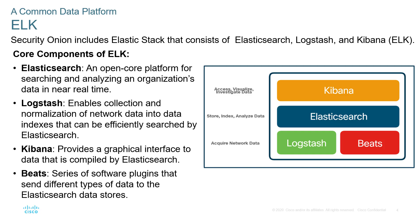The core components of ELK are: Elasticsearch, which is an open core platform for searching and analyzing; Logstash, which enables the collection and normalization of network data into data indexes; Kibana, which provides a graphical interface to the data; and Beats, a series of software plugins that send different types of data to the Elasticsearch data store. This is how we acquire, store, and visualize our data.